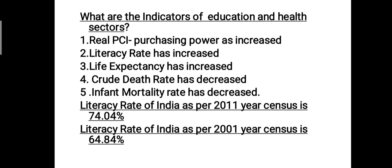Second indicator is literacy rate has increased. The literacy rate of India as per the 2001 census was 64.84%, whereas the literacy rate as per the 2011 census is 74.04%, which shows that people who know how to read and write in our country has increased. This is an indicator of the education and health sector.